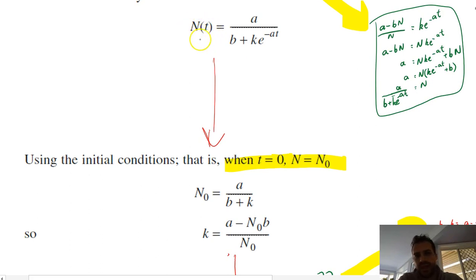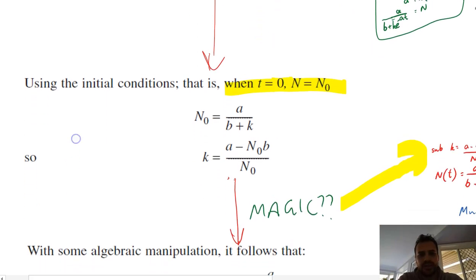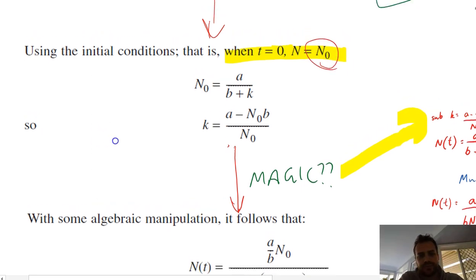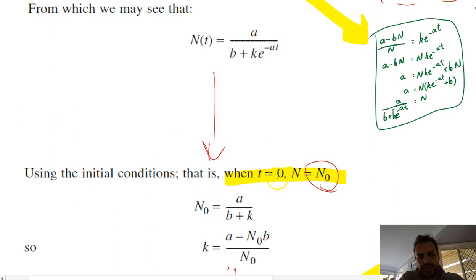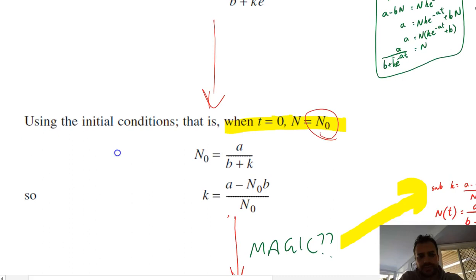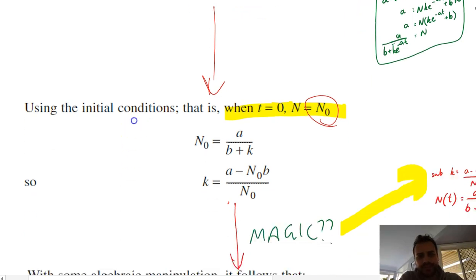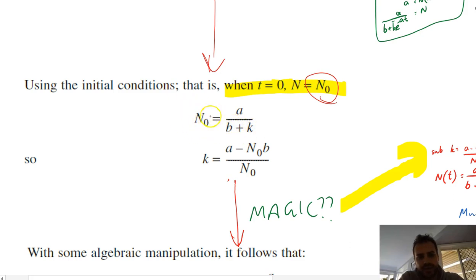Okay. And then. So we've got n to the, sorry, n equals a over b plus ke to the negative a t. Now, using initial conditions, when time is equal to 0, n is equal to n 0. So at time 0, our initial population is n 0. So if we do sub in t equals 0 into this, that's going to be k times e to the 0, which is just going to be 1. So then that's just going to give us a on b. Oh, sorry, e to the 0 is going to be 1. So it's going to be 1k. So it's a on b plus k, which is what we have here.